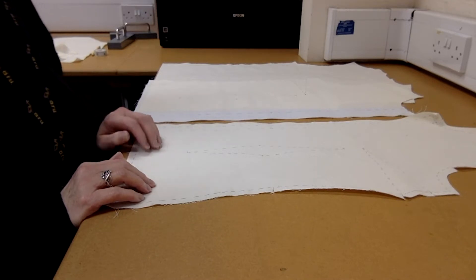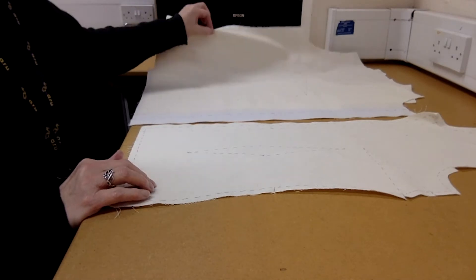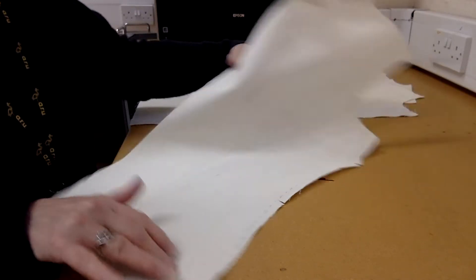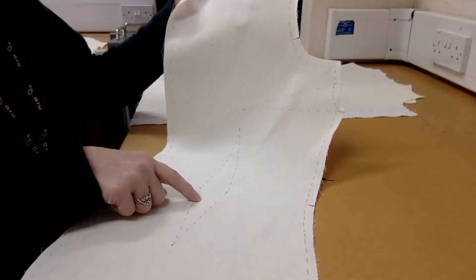In this short video we're going to look at how you close your darts for your shirt. Hopefully we've now cut out your three main pieces and you've marked on your pieces the darts that you need to close.